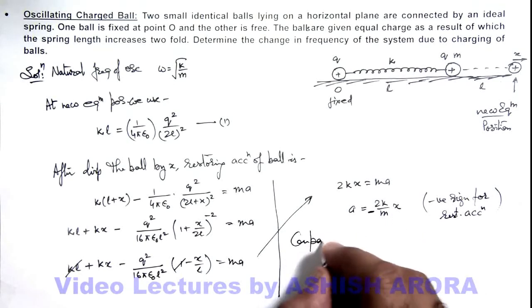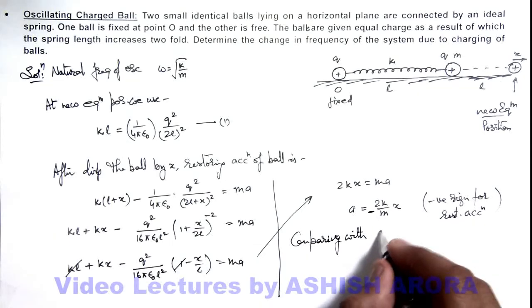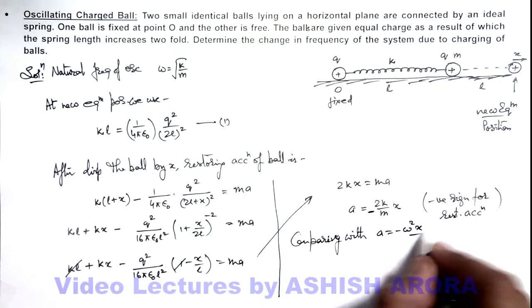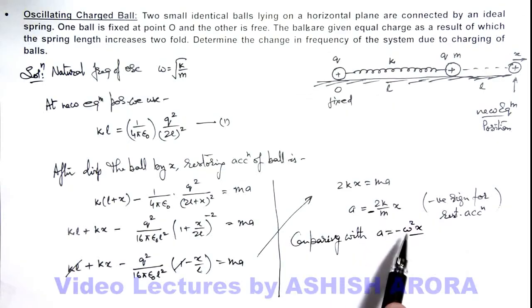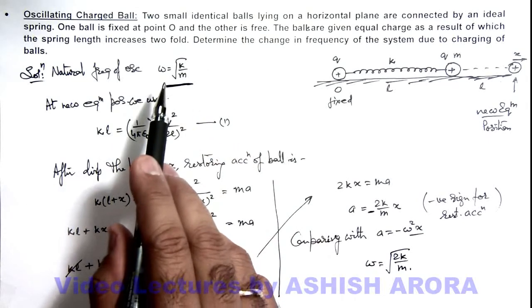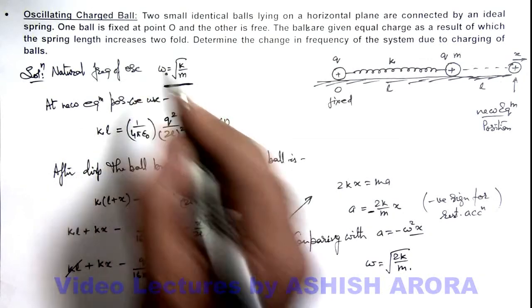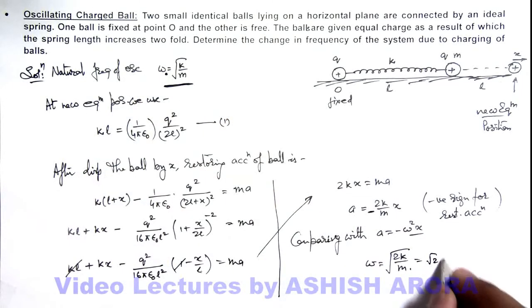And if we compare with the general differential equation of SHM which is minus omega squared x, we can get the value of omega. As acceleration is proportional to x, it signifies that it is executing SHM. And on comparing we are getting the value of omega as root of 2k/m. And we already studied that natural oscillation frequency of ball here is root of k/m. And after charging it is root 2k/m. If we take this as omega_0, this can be written as root 2 times omega_0. So here we can write that frequency changes to root 2 times.